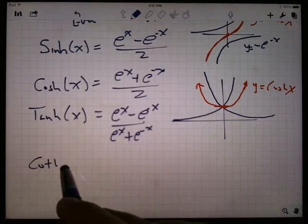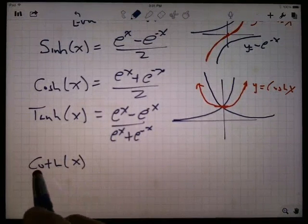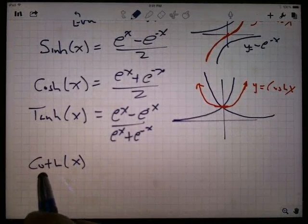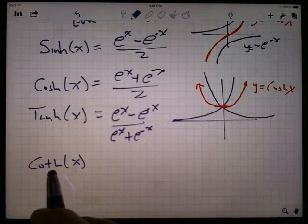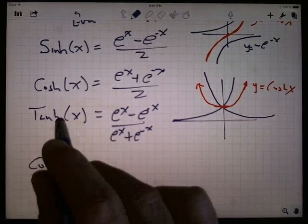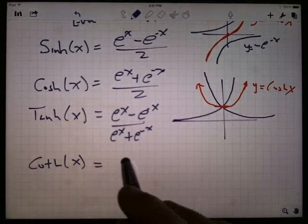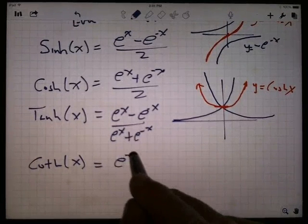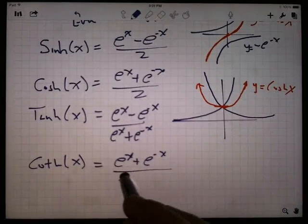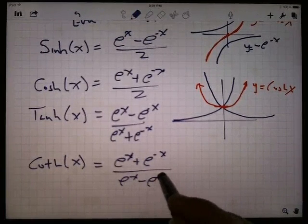Then I've got the hyperbolic cotangent, which is sometimes called cloth. Coth reminds me of Star Wars. The ice planet. No, that's Hoth. Anyway, sorry. So the hyperbolic cotangent should be the reciprocal hyperbolic tangent. So that's what will make it e to the x plus e to the minus x over e to the x minus e to the minus x.